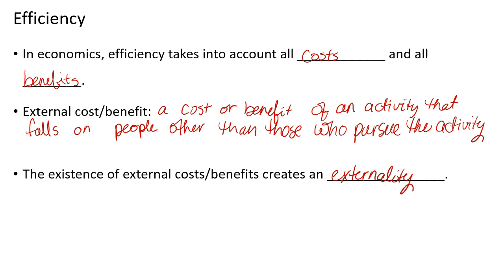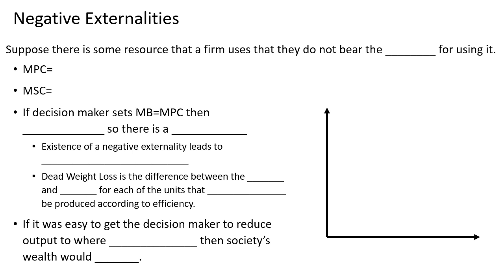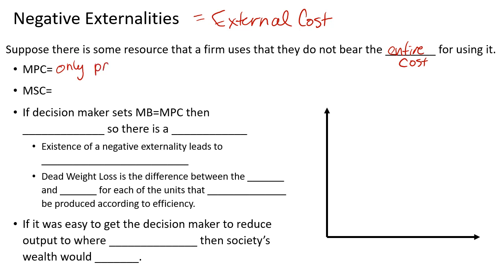Depending on whether it is a cost or benefit determines whether it's a negative or a positive externality. For a negative externality, there is an external cost — some type of resource or production process that the firm uses where they do not bear the entire cost. This causes there to be two separate cost curves: the private cost, which is only the producer's cost, and the marginal social cost, which is the private cost plus whatever external cost there is.